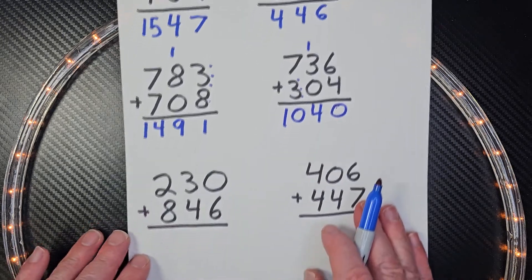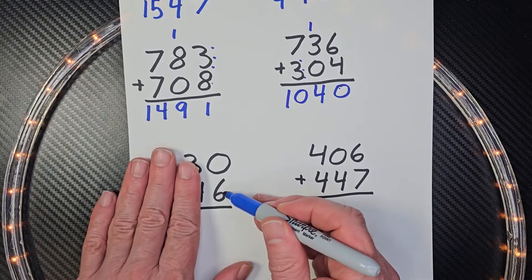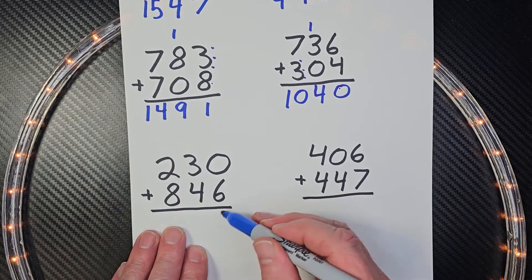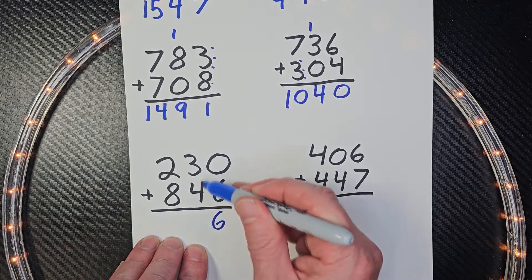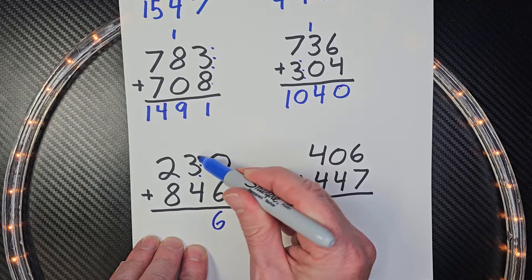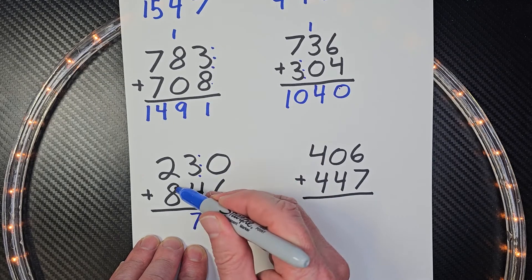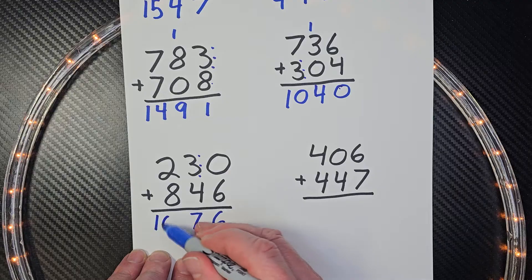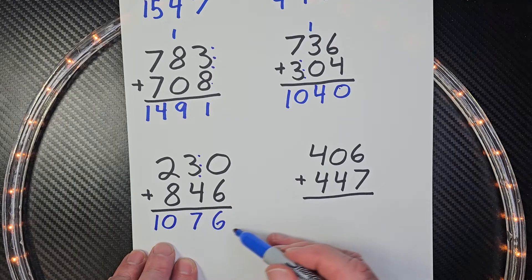All right, we just got two more to go. So again, we just add the ones first. Six plus zero is six. Four plus three: four, five, six, seven, and then eight plus two is ten. The answer is one thousand seventy-six.